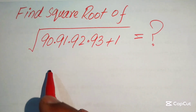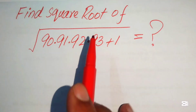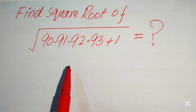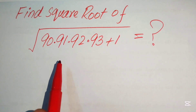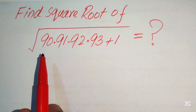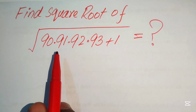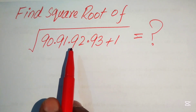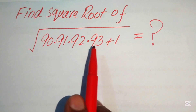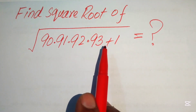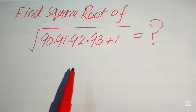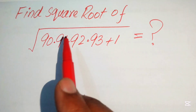Hello everyone. How to find the square root of this nice algebraic expression: 90 multiplied by 91 multiplied by 92 multiplied by 93 plus 1, and its whole square root. So we find the value of this square root.